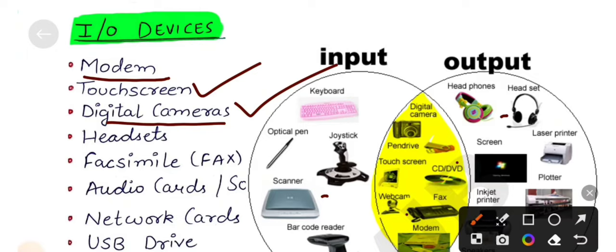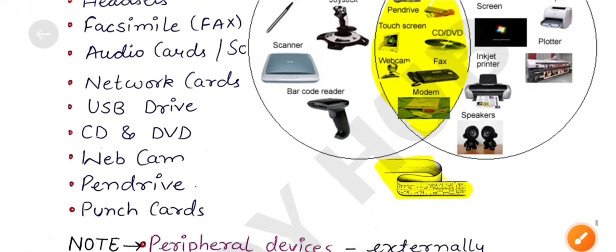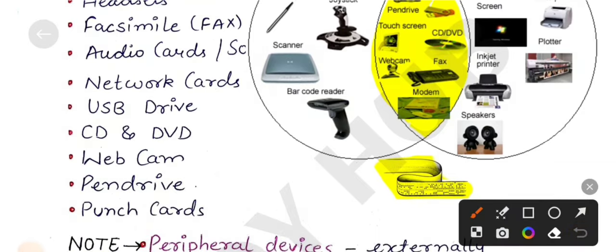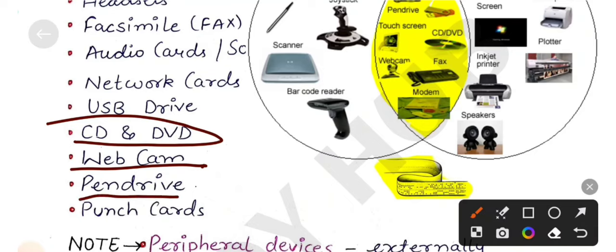I.O. device, then fax machine here, scanner, printer, signals send and receive. So fax machine, audio card network sound. USB device, here we receive, send and save. This I.O. device. Then CD, DVD, here send and receive. Web camera, video also input also output result also, send and receive.